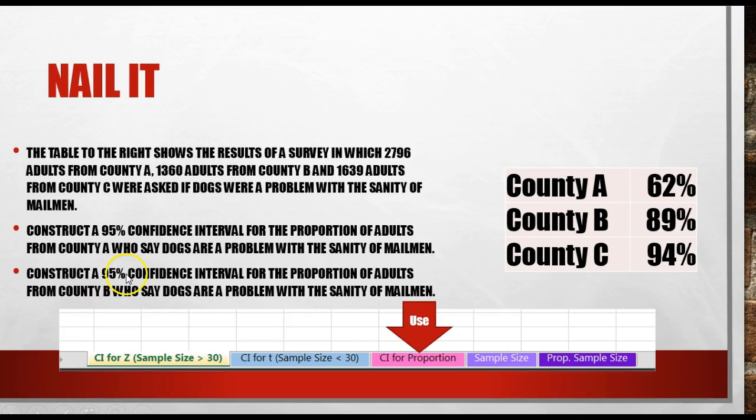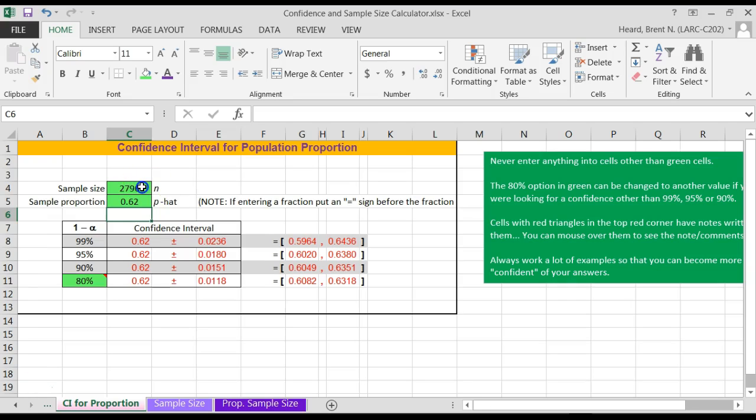Now let's do the second part. It's a 95% confidence interval for County B. In County B, I had 1,360 adults, 89%. So let's work that one. Let's put in the number in County B. It was 1,360. The sample proportion was 89%. So I'm going to put in 0.89. Hit the enter button.